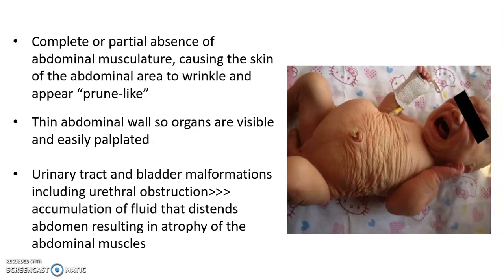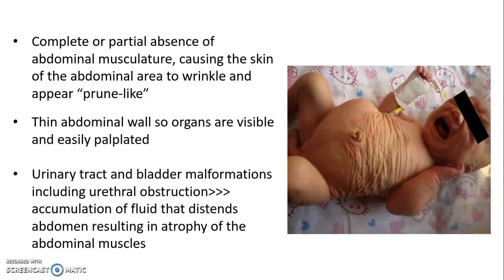Prune belly syndrome is sometimes associated with urinary tract and bladder malformations including urethral obstruction. Urethral obstruction leads to accumulation of fluid that distends the abdomen, resulting in atrophy of abdominal muscles. This typical picture can also be called dough belly, because the abdominal skin resembles dough.